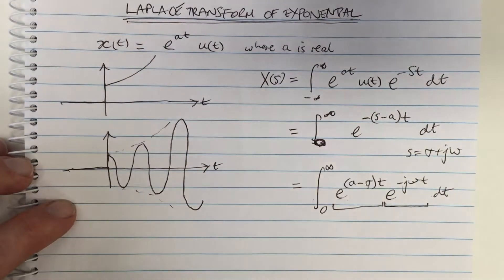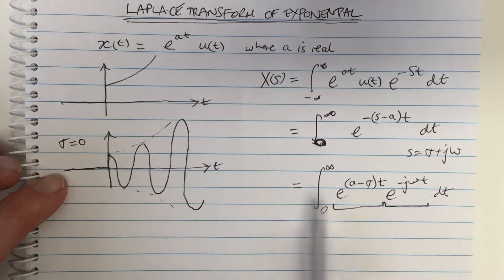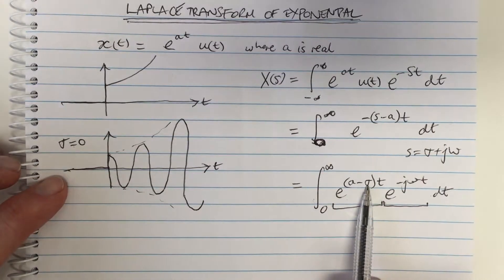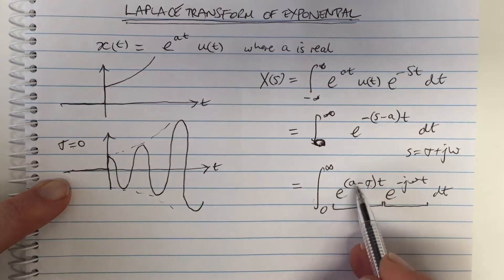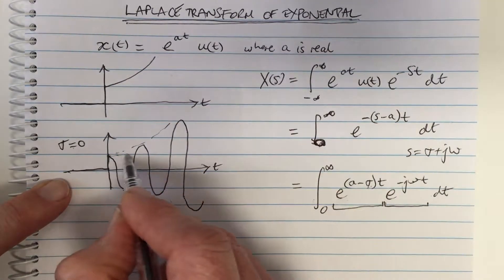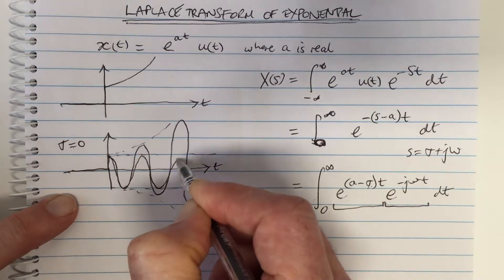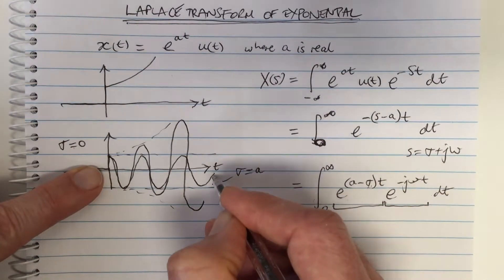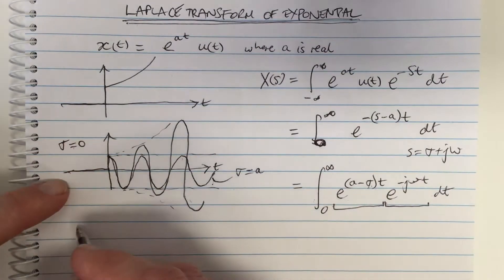Multiplied by the unit step function, this is zero for negative time. Clearly, for σ = 0, this growing function means the integral goes to infinity — we cannot evaluate it for this value of sigma. What if σ equals a? Then e^((a−σ)t) = e^0 = 1, so the real part is just a cosine waveform — not growing, constant peak amplitude extending to infinity.